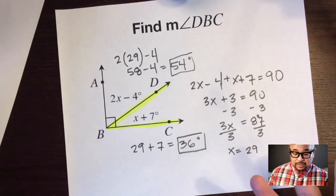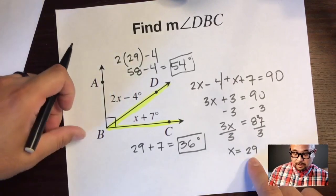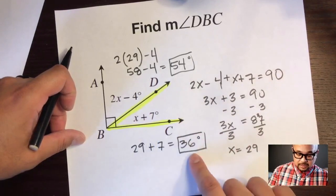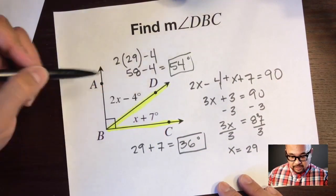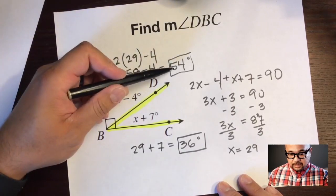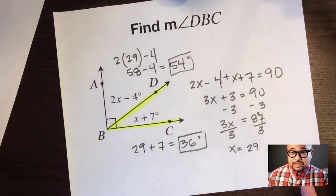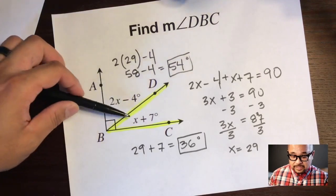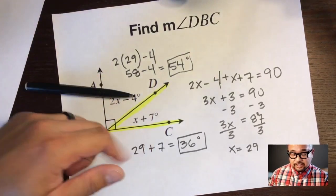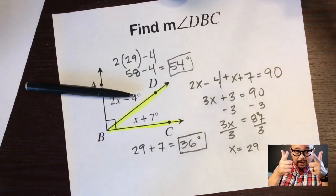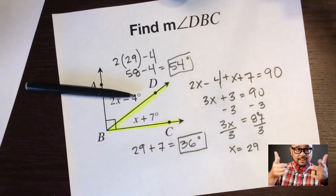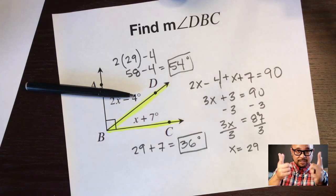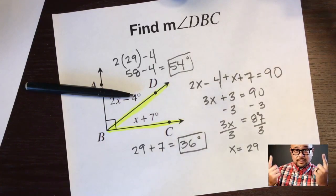Now why is it important that this is 54 degrees? Well, if we added 54 and 36, what's 54 plus 36? 90 degrees. So we know that we're pretty sure we're correct with our answer because when we plugged in 29 into DBC it gave us 36, when we plugged 29 into angle ABD we got 54, and these aren't just random numbers because 54 plus 36 is 90 degrees. So these two angles add up to 90 degrees, they're compliments. So hey, great job today, great job with complementary angles, and hopefully you guys get all these correct on the next quiz or test. Have a great day.